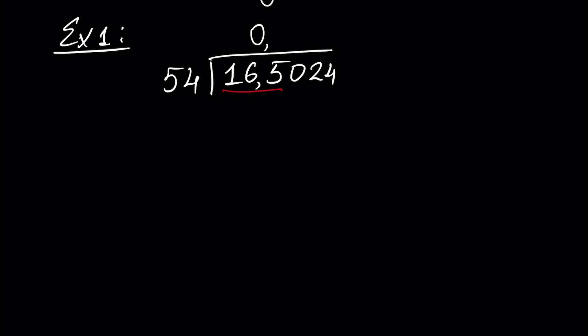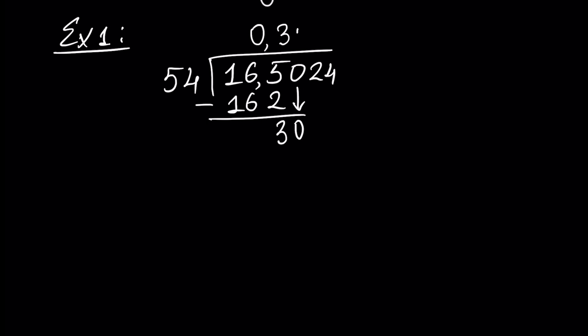Do not pay attention that it has a decimal point — let's assume this is number 165. How many 54s we have inside 165? We have three. Three times 54 is 162, so we write minus 162. 165 minus 162 is 3. We write this 0 here. Is it enough for division? How many 54s we have inside 30? Zero.